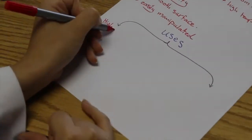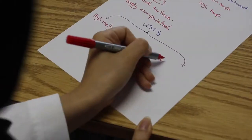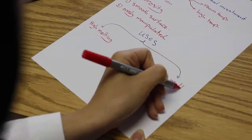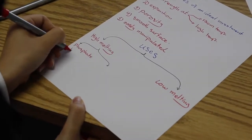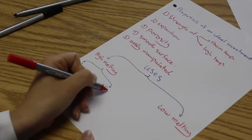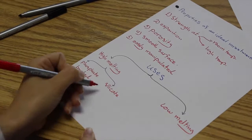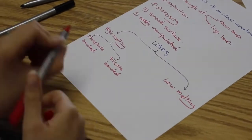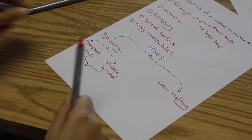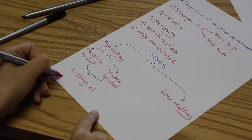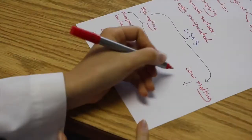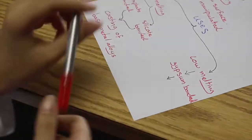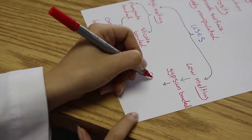The uses are divided into high melting and low melting. High melting: phosphate bonded and silicate bonded are suitable for casting of base metal alloys. Low melting: gypsum bonded is suitable for casting of gold alloys.